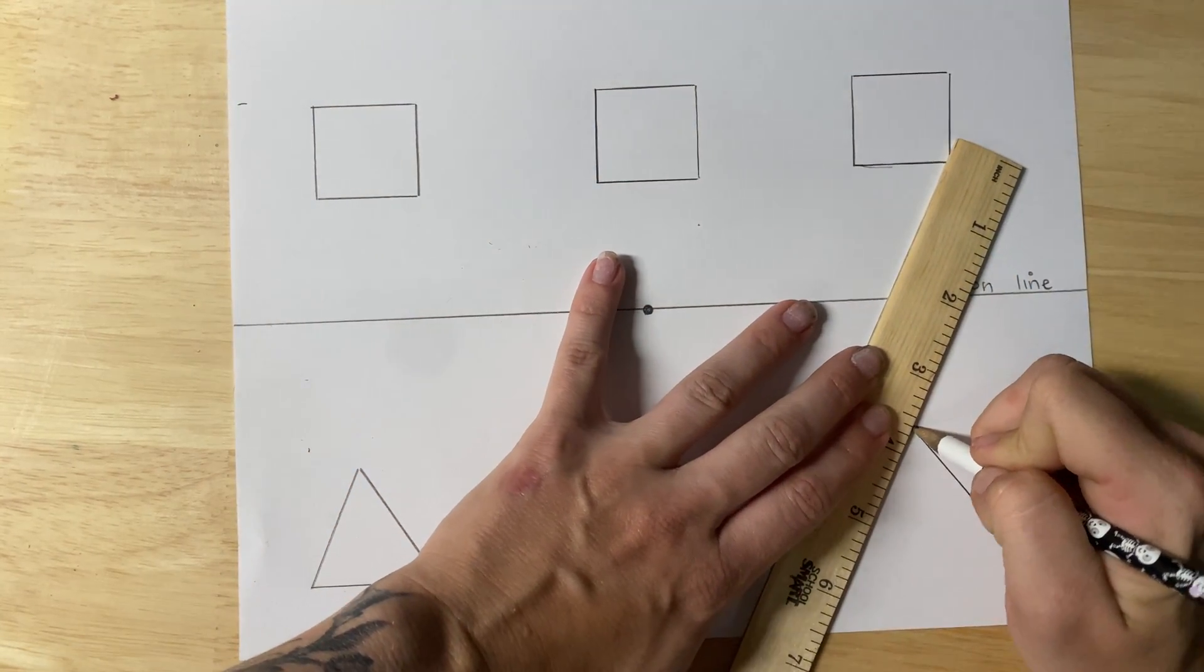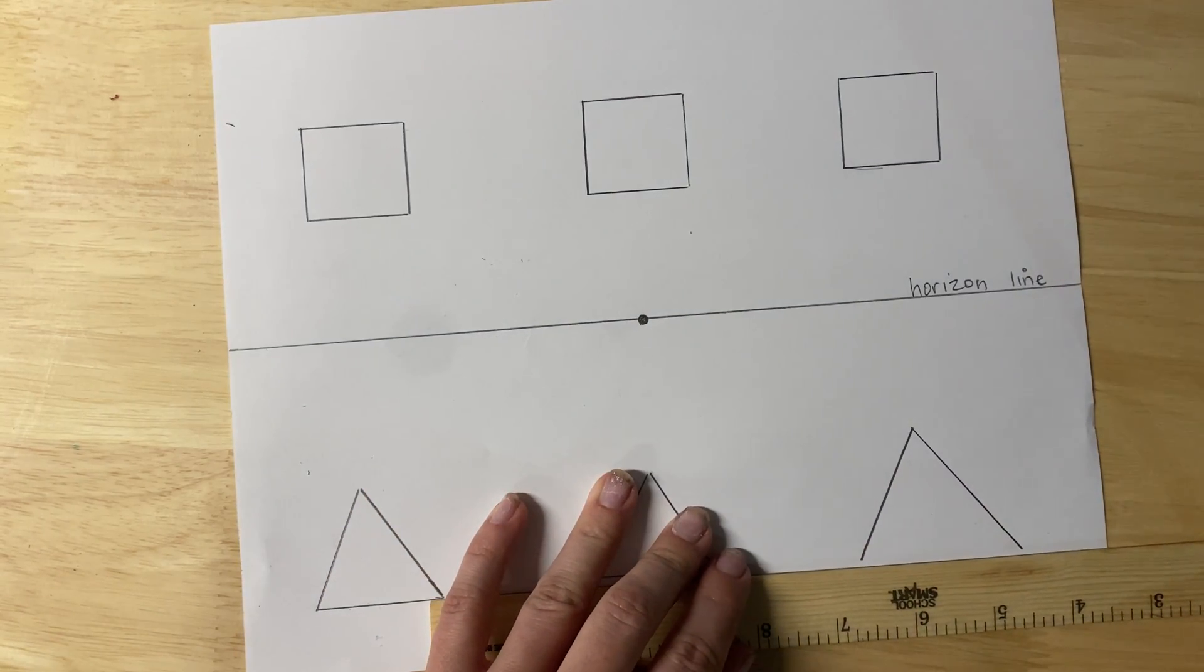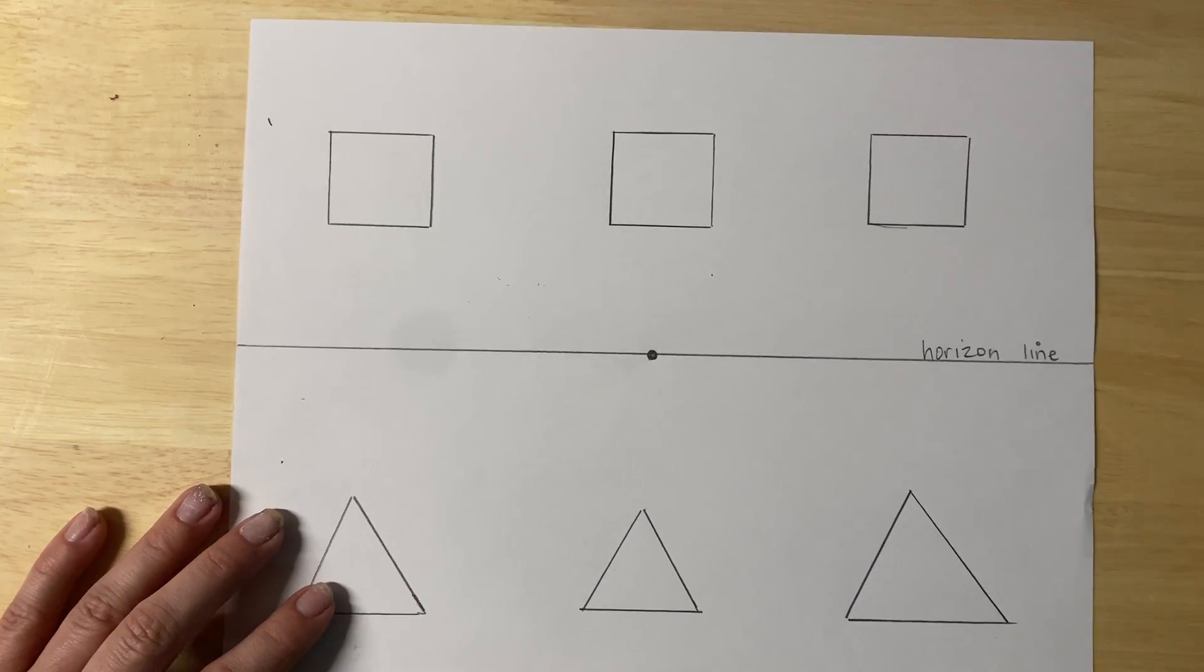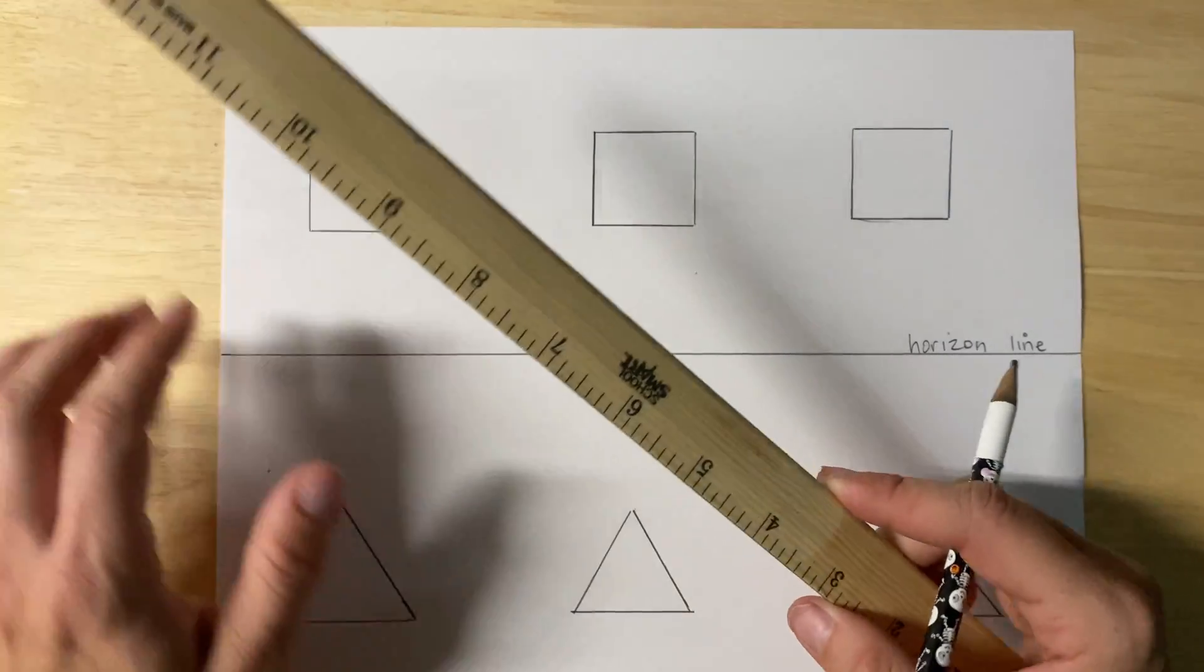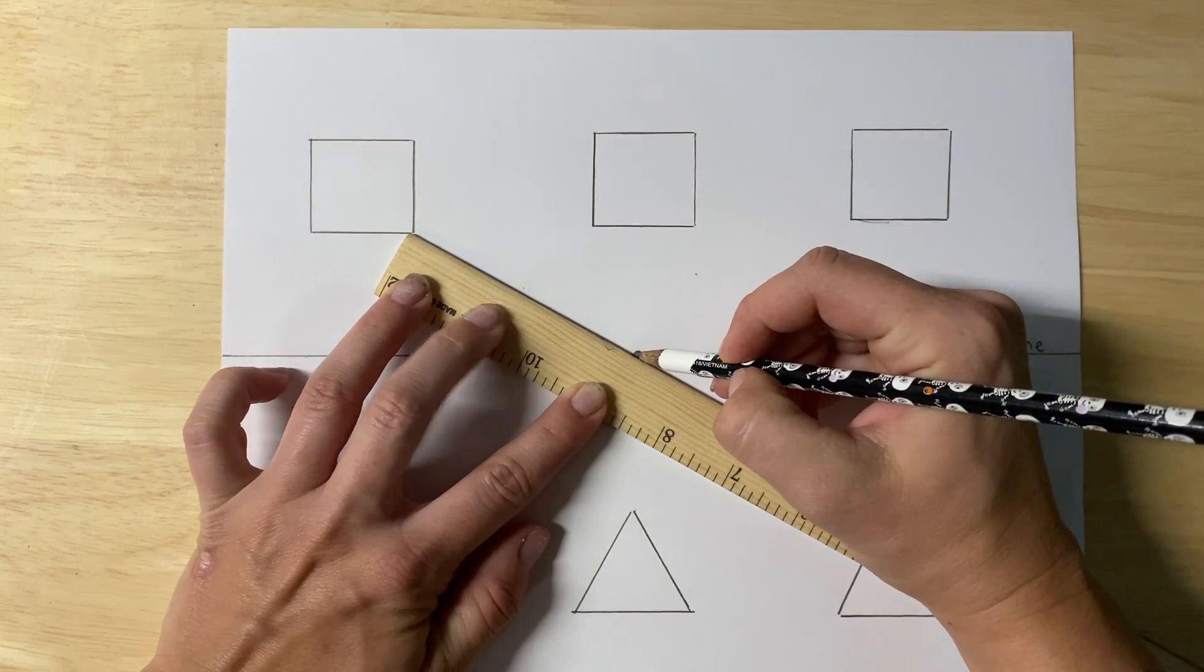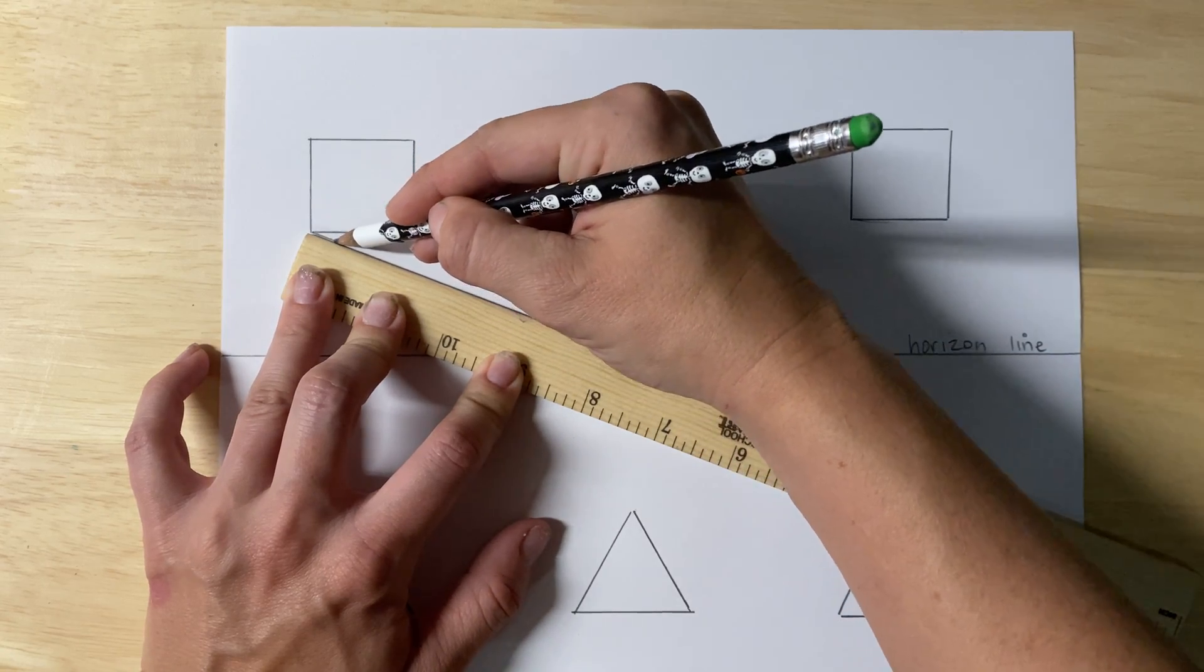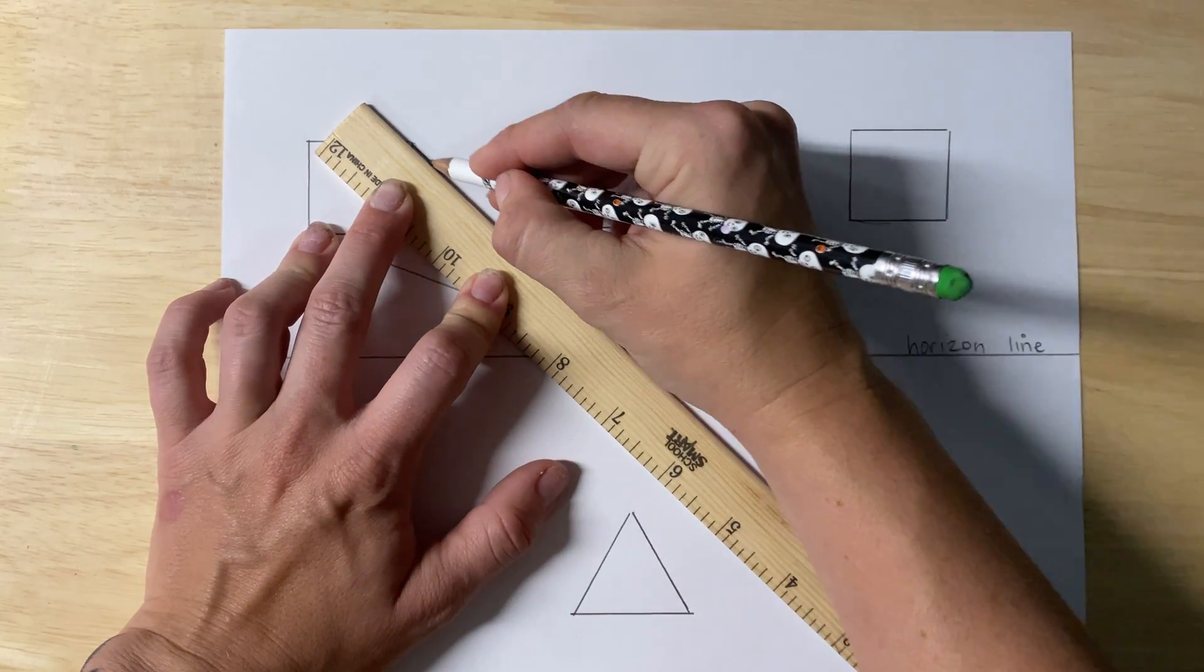All right. So right now they're flat shapes. We need to transform them into three-dimensional shapes. I'm going to start with this first one here. You're going to look at the corners of your square. Hold your ruler down to that vanishing point. Line them up. Please draw lightly because you will be erasing these lines, or some of these lines. Next corner to my vanishing point. And this corner to my vanishing point.